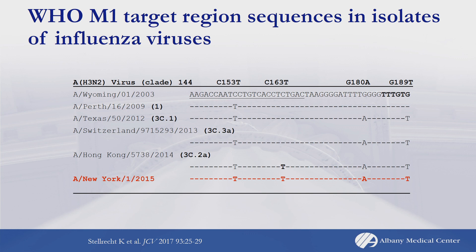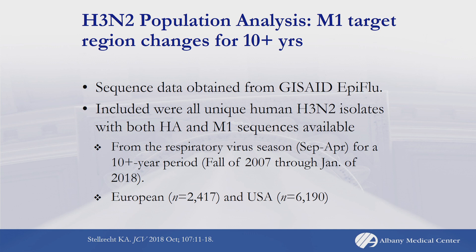We were working with Hologic at this time to figure out what was going on with the ProFlu assay. We sent them quite a few samples, which they sequenced. They made the sequence for one isolate publicly available in GenBank — the A/New York/1/2015 — and we can see that virus looks like the clade 3C2A in the matrix gene. We then sequenced 10 of our own isolates and found the exact same sequence, raising the question: how prevalent is this mutation?